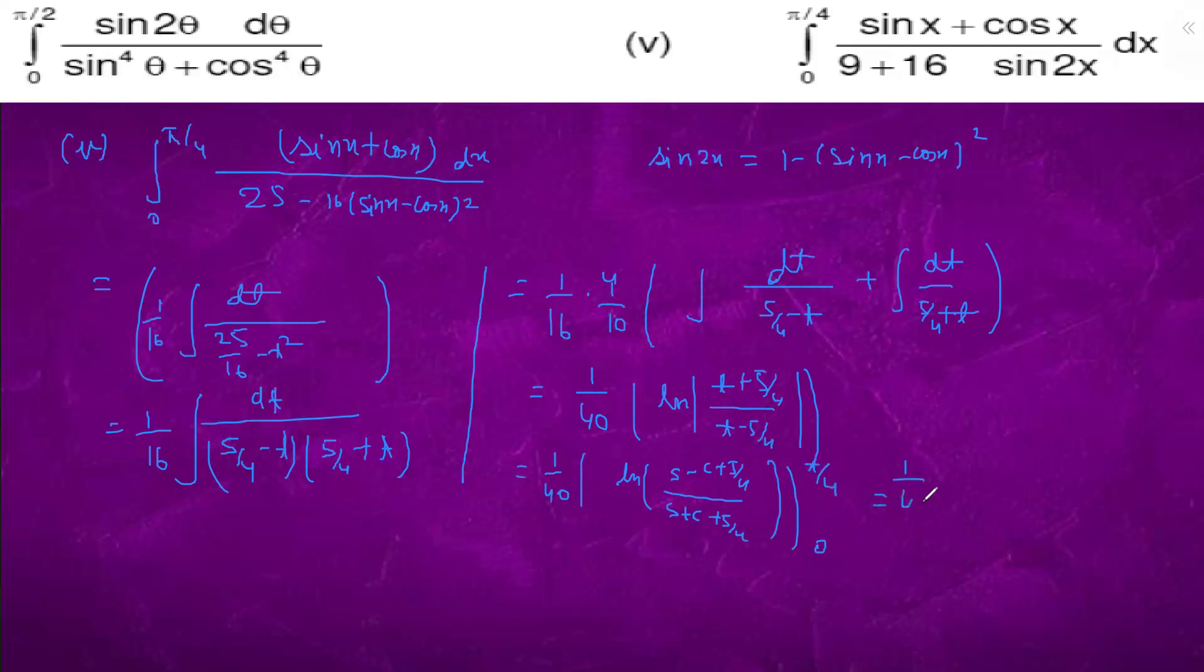So 1 by 40 on 0. On pi by 4, it is, this will get cancelled, it is ln 3 by 4 upon root 2 plus 3 by 4.